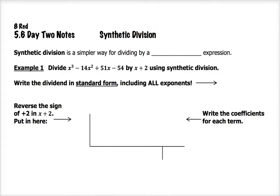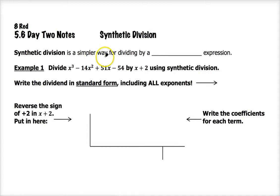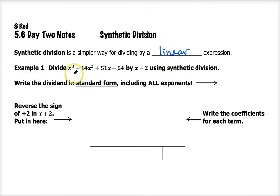Hey guys, in this next video we're going to look at an alternative to long division, and that is what's known as synthetic division. Synthetic division is, in my opinion, just a simpler way for dividing by a linear expression. Notice I say linear expression — this only works when what you're dividing by is degree one. If what you're dividing by is degree two or higher, then you have to resort to long division. So we're going to divide x cubed minus 14x squared plus 51x minus 54 by the binomial x plus 2 using synthetic division.